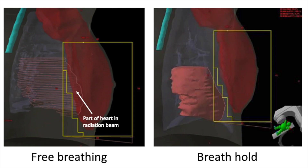In these pictures, the yellow shape shows the area treated with radiation. The red is the breast and the pink is the heart. As you can see in the image on the left, which is a free breathing treatment, some of the heart is within the yellow shape, which means it is getting some radiation dose.